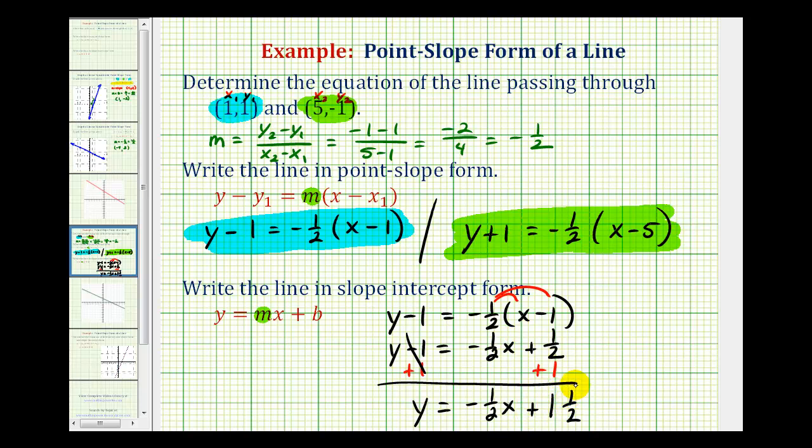But most of the time you won't see this as a mixed number. Let's go ahead and write this as an improper fraction. We would have Y equals negative 1 half X, and this would be plus 3 halves.